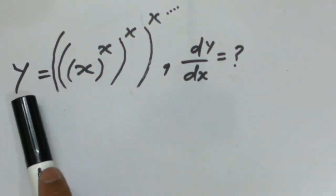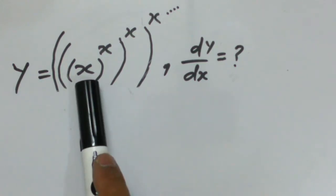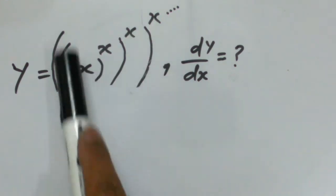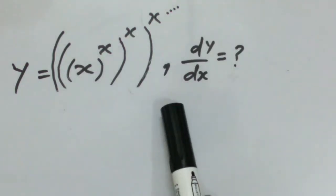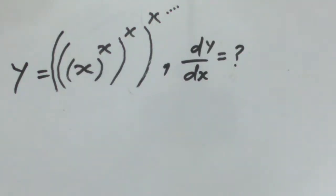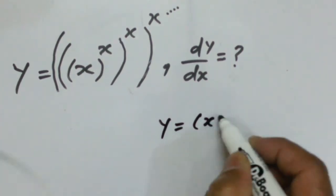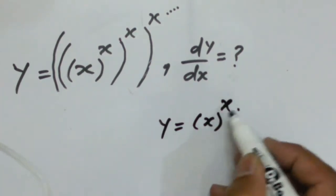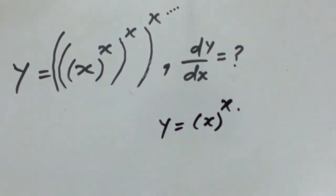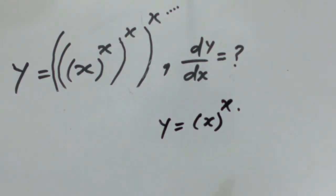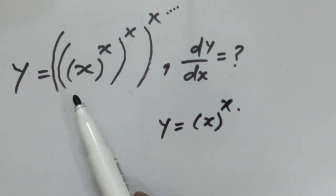We have to calculate the derivative of the function y = x^(x^(x^...)) and so on. The given function is in the form of y = x^x. The derivative of this type of function is already explained in our previous lecture, and we adopt the same procedure for the calculation of the derivative of the given function.